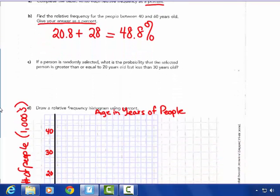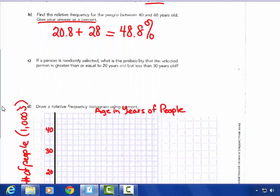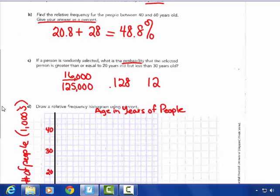If a person is randomly selected, what is the probability that the selected person is greater than or equal to 20 years old, but less than 30 years old? That's this group right here, which is 12.8 percent. So what is the probability? Probability could be answered a couple ways. I could say 16,000 out of 125,000. Probability could also be answered as the decimal 0.128, or as the percent. So any one of these answers would be correct.